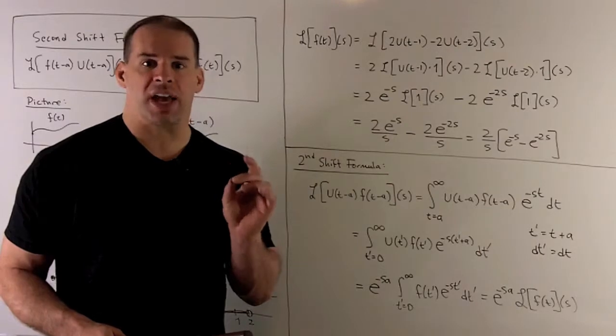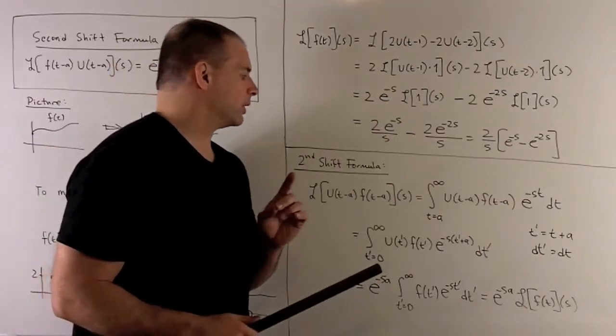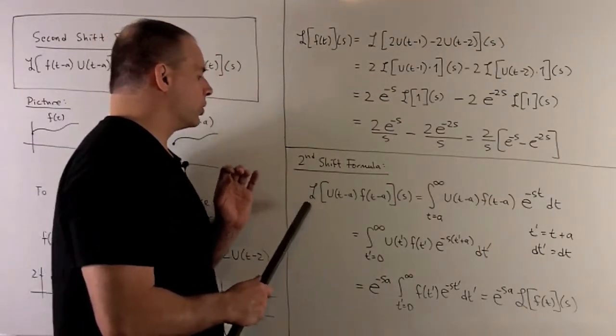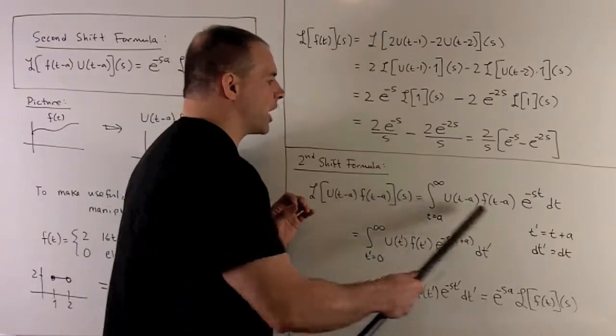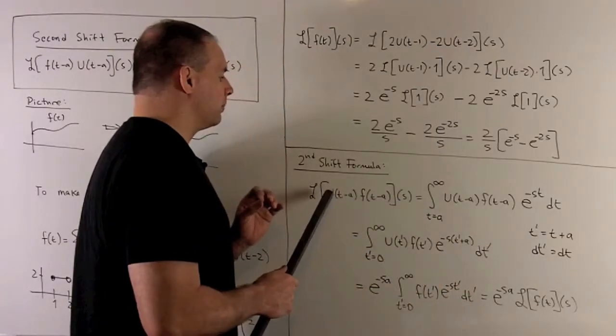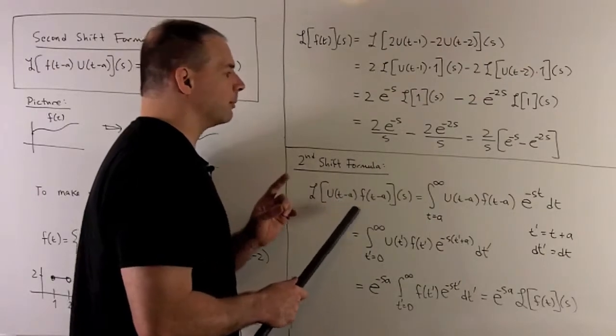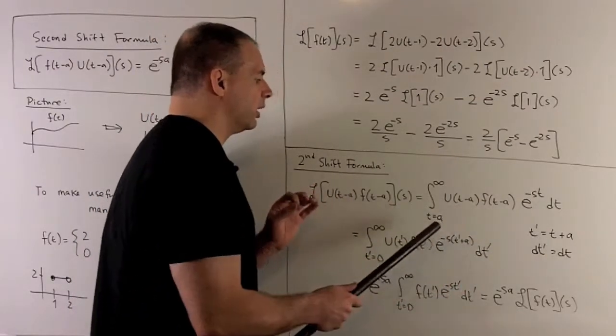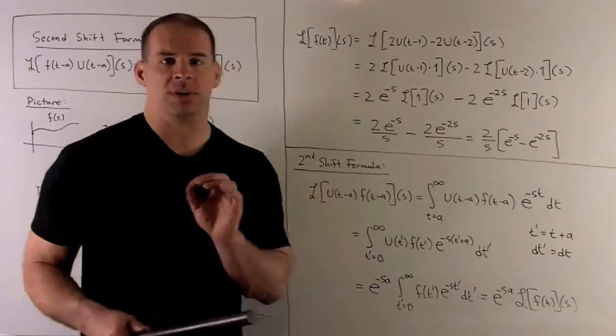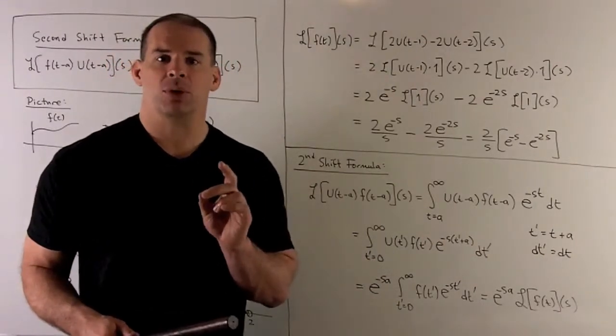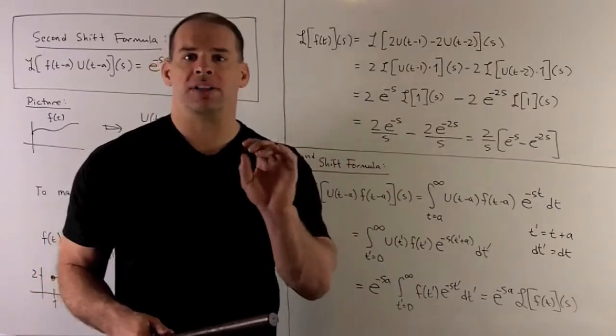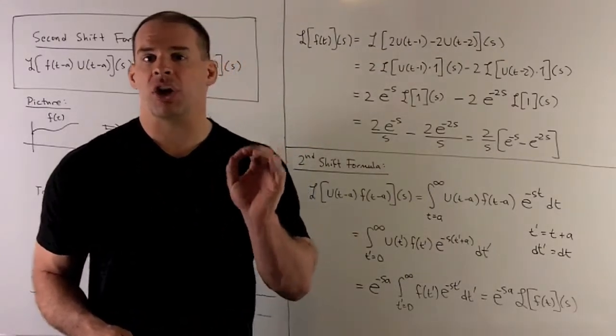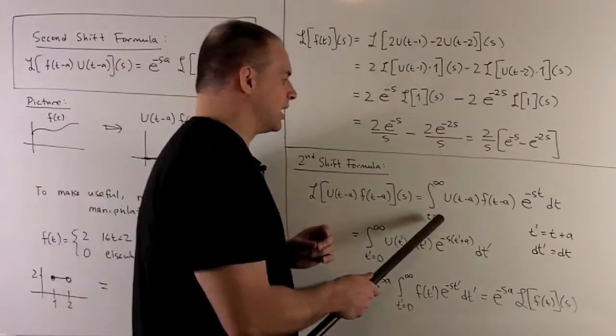Now, let's see where our second shift formula comes from. So the idea is we just follow our nose. I write out the definition. So I write out the definition of Laplace transform with, okay, this term in here as our function. Now, first thing I'm going to do is we would normally start with t equal to zero. But since I'm using the shifted unit step function, we're going to be set to zero until we get up to a. So I'm going to start our integration off at t equal to a.